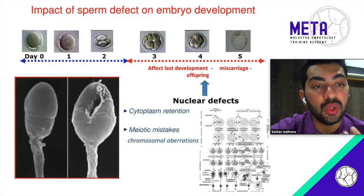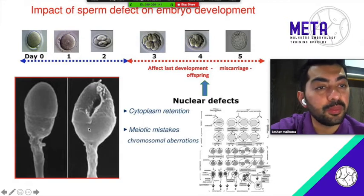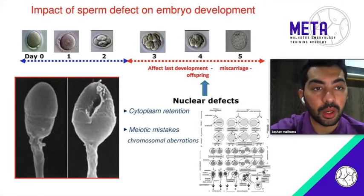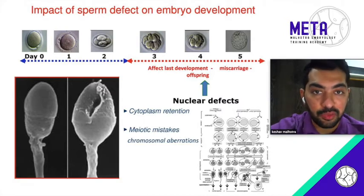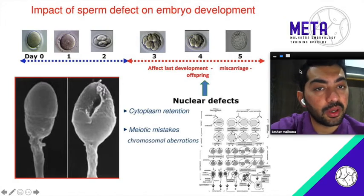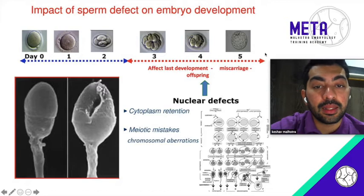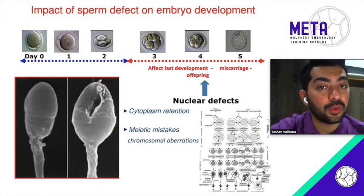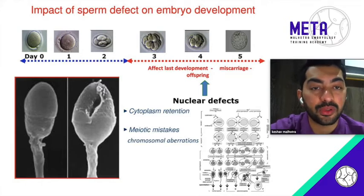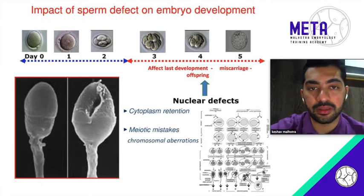Then you have nuclear defects, which are basically disorders of the sperm nucleus. Inside the sperm head, the nucleus will not be present or will be deficient. These are the ones that affect the later stages of embryonic development, like the third cleavage, fourth cleavage, and blastulation. They can also be responsible for affecting late developmental stages, can cause miscarriages, and can cause aversions. These are things we need to consider as far as sperm morphology is concerned.